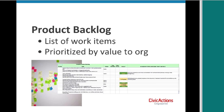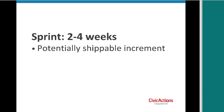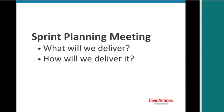The team takes some items off the top of the product backlog and focuses on completing that work in a two-to-four-week sprint. At the end of that sprint, what you're shooting for is a potentially shippable increment of the product — working software. At the beginning of the sprint, you have a sprint planning meeting where the product owner and the team decide together what they will deliver in, say, two weeks, and how they will deliver it. The list of work is frozen at that point — you don't shift things in and out of the sprint.